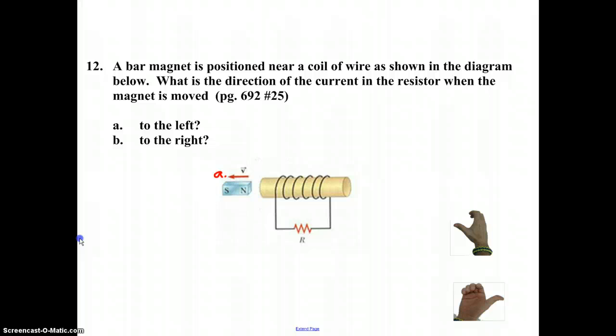As we discussed with Lenz's law, this magnet is moved away from the solenoid, which will induce a current in that coil of wire. That induced current will produce a magnetic field that opposes that departing north pole. So what opposes a departing north pole? Attraction would oppose that. And so that would be this being a north pole, and that being a south pole.